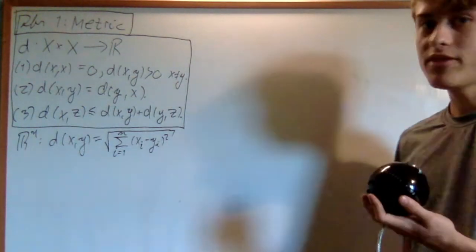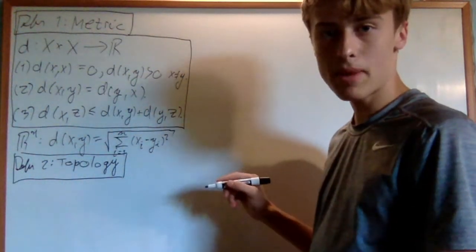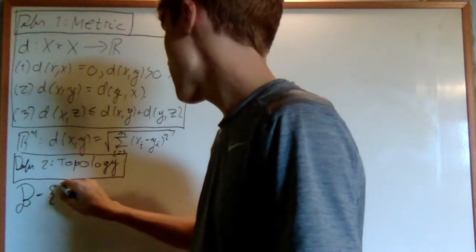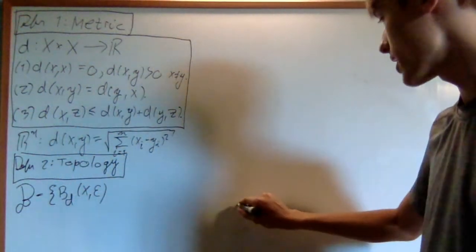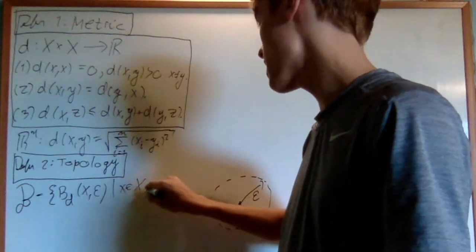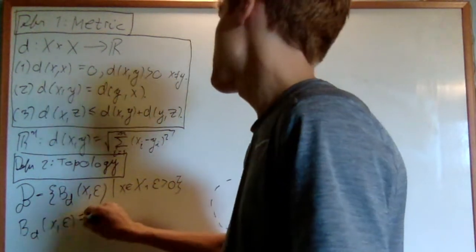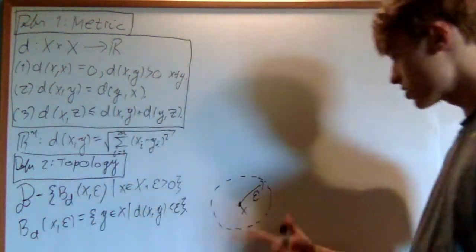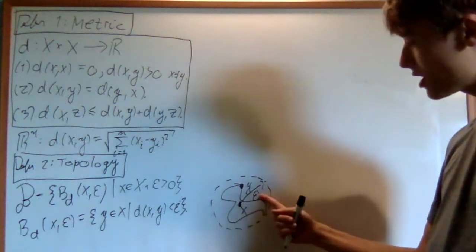Now we can generate a topology given a metric or distance function. The topology is going to be the one generated by a basis B, equal to the set of balls given by metric d around a point x of radius epsilon — for x in X and epsilon greater than zero. This ball is defined as the set of y in X such that the distance between x and y is less than epsilon. Any point y whose distance to x is less than epsilon is going to be in this ball. This basis generates the metric topology.